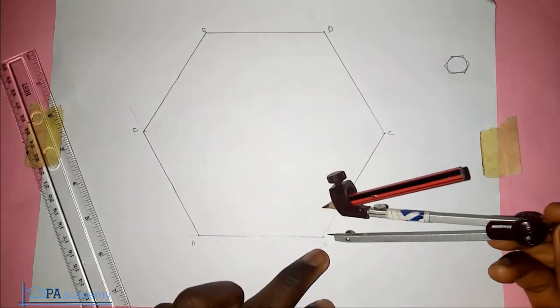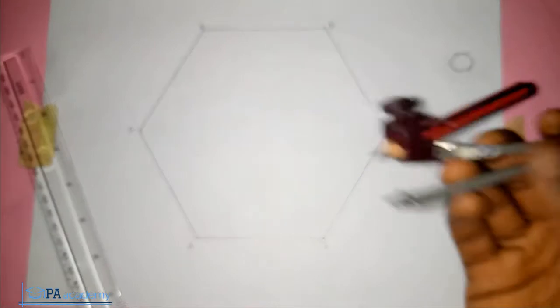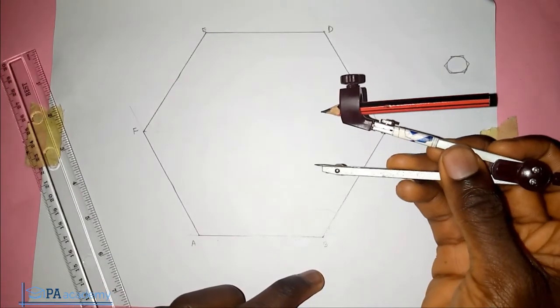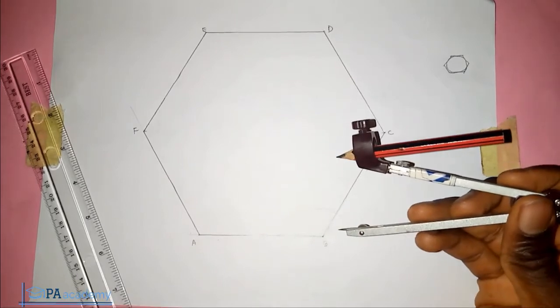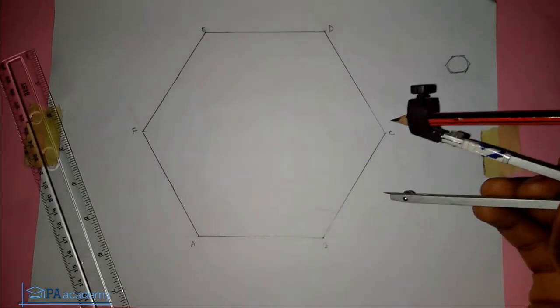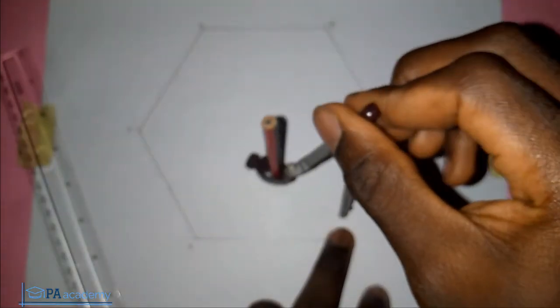Make sure the arc is cutting the two lines that extend away from B. Now extend your compass a bit. From those two points on the lines, draw arcs that will intercept.